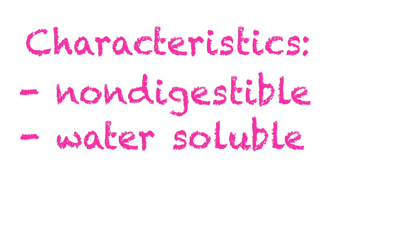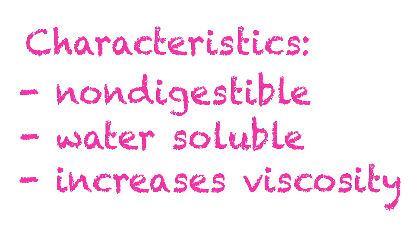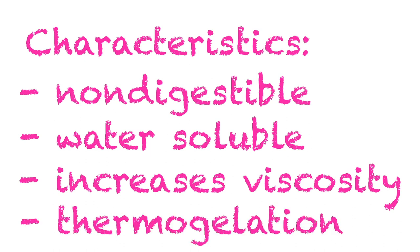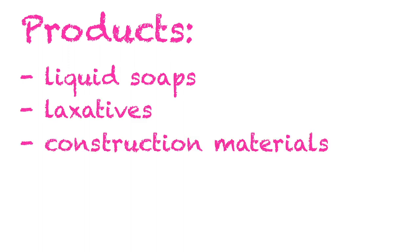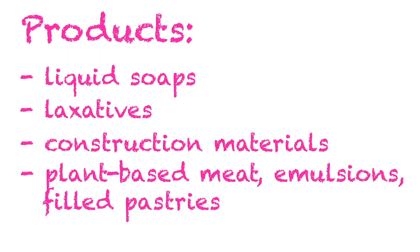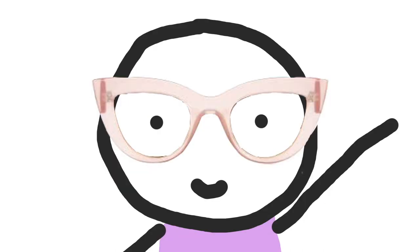To summarize, some important characteristics of methyl cellulose are its indigestibility, water solubility, its ability to increase viscosity, and thermal gelation. Some examples of products it's used in are liquid soaps, laxatives, construction materials, and foods such as plant-based meat, emulsions, and filled pastries. It is generally recognized as safe by the FDA. That's all for today, and I hope you learned something new about methyl cellulose.